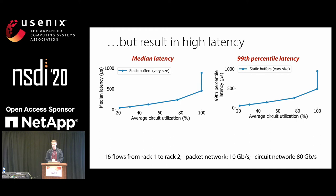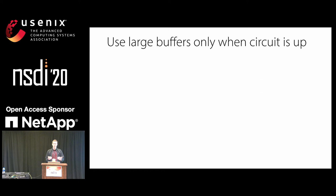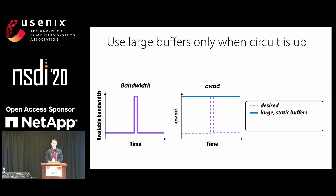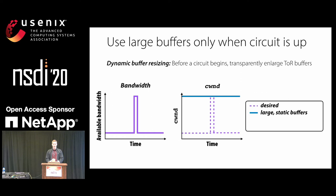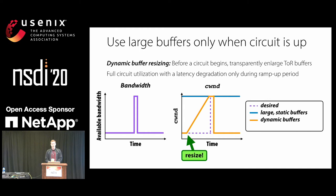Our next question is: how can we improve this latency? The insight is that we're using large buffers for most of the time — maintaining a huge congestion window throughout the entire experiment. Why not use large buffers only when a circuit is active? This is the crux of our first technique: dynamic buffer resizing. Some amount of time before a circuit becomes active, we transparently resize the top-of-rack switch queues from small to large. TCP then has space to grow its congestion window, and we reach full utilization — with latency degradation only during the brief pre-circuit window.